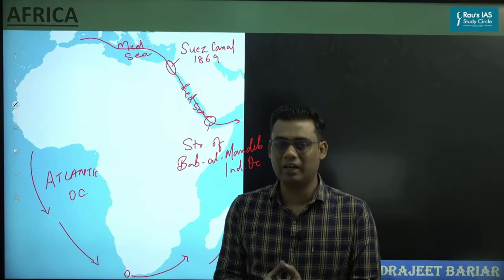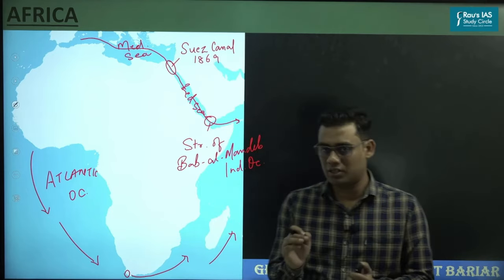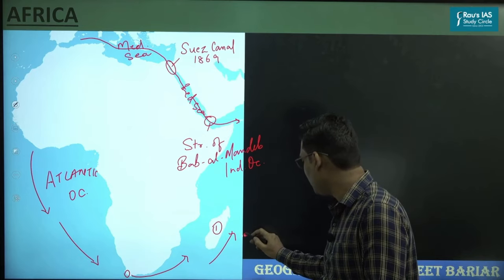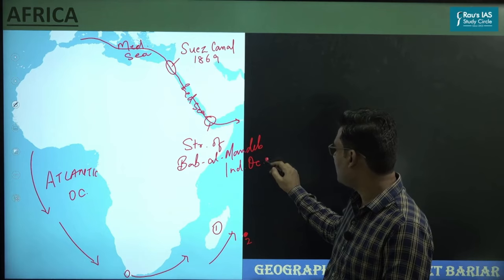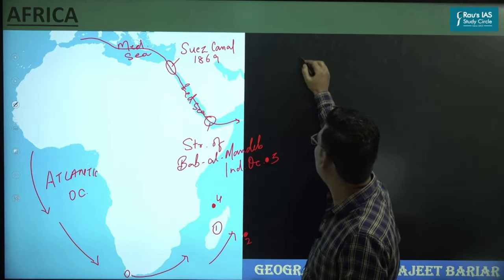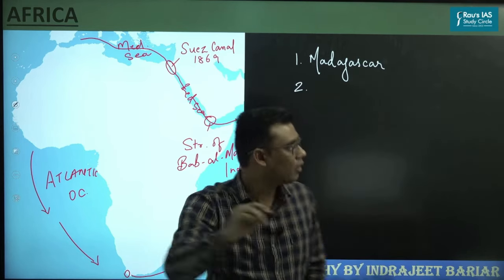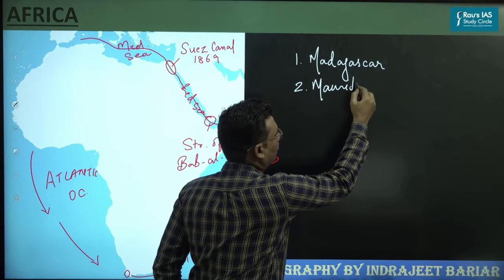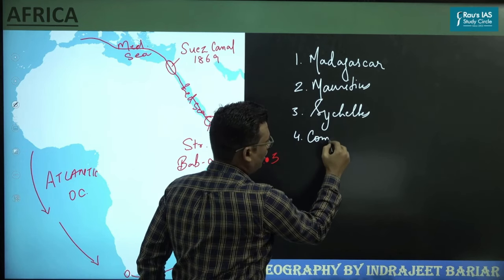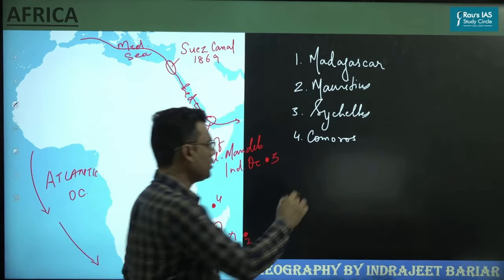Africa as a continent is surrounded by a number of islands, out of which there are four sovereign island nations. The first one is Madagascar, the second one is Mauritius, the third one is the Seychelles Islands, and the fourth one is Comoros. These are the four sovereign island nations.